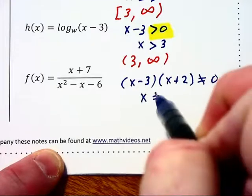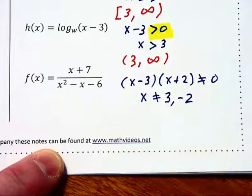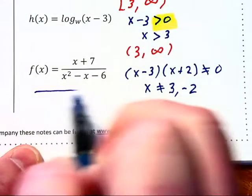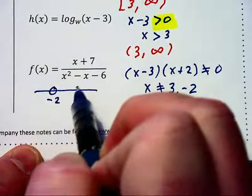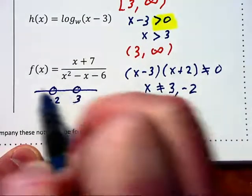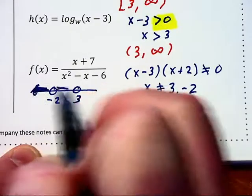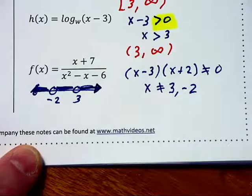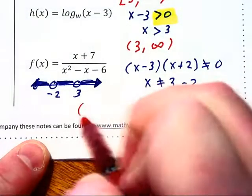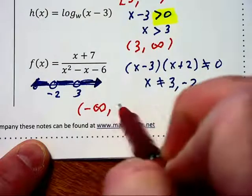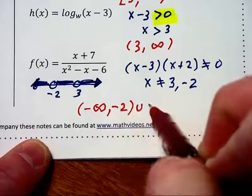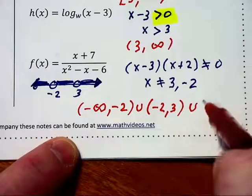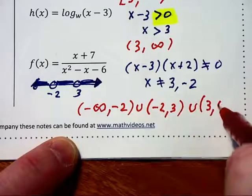If we were to graph this on a number line, we would have all values except negative 2 and 3 shaded. Off to the left, between the values, and off to the right. So in interval notation, we would write this domain as negative infinity up to negative 2, united with the interval between negative 2 and 3, and then united again with the interval to the right of positive 3.